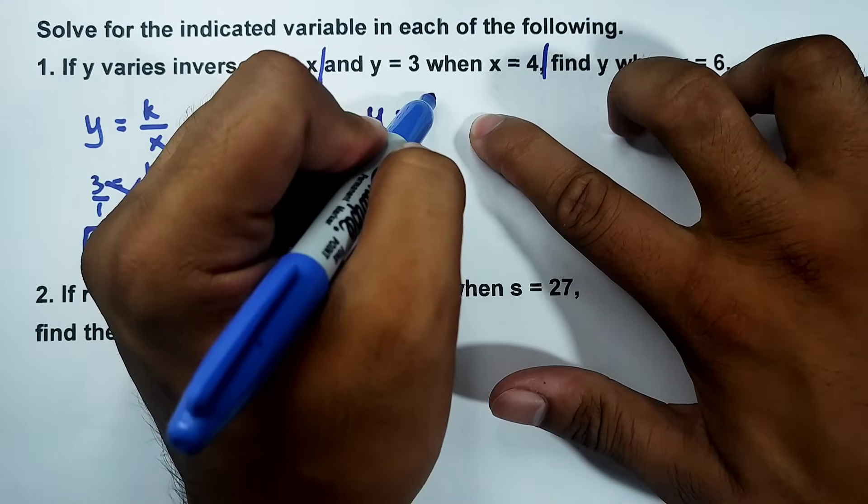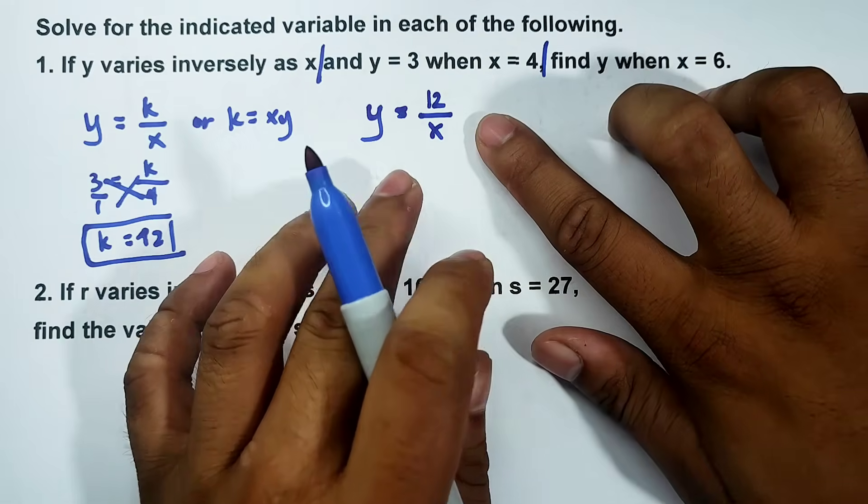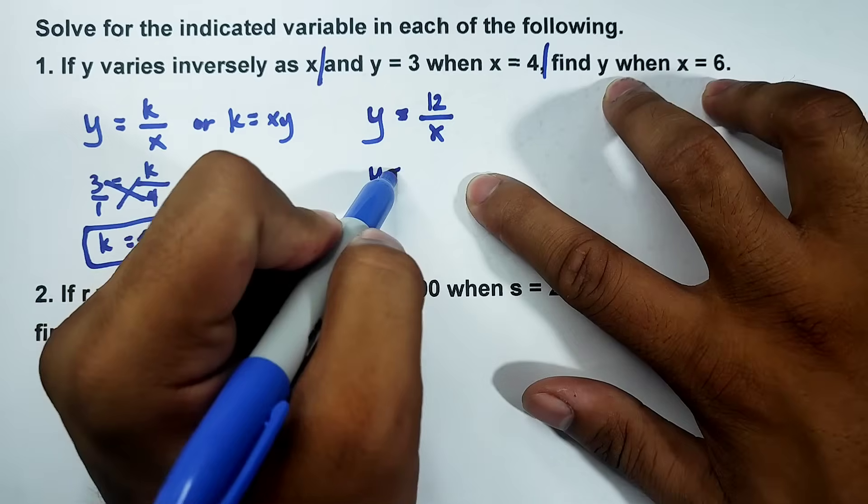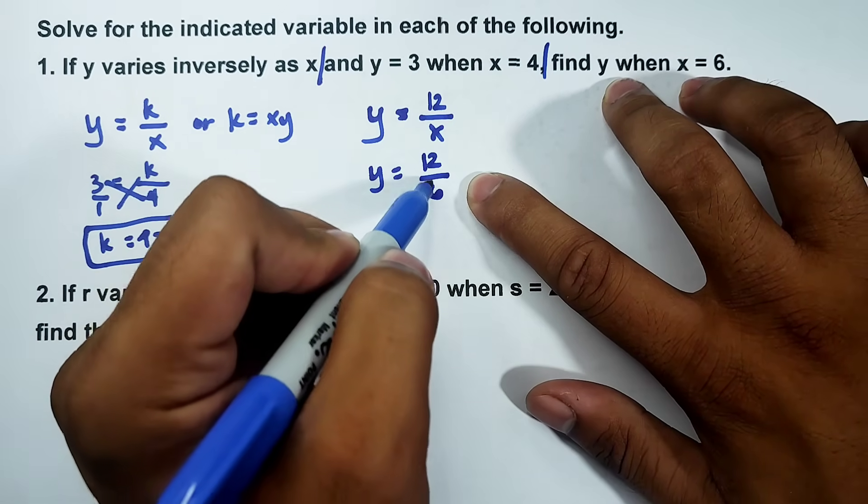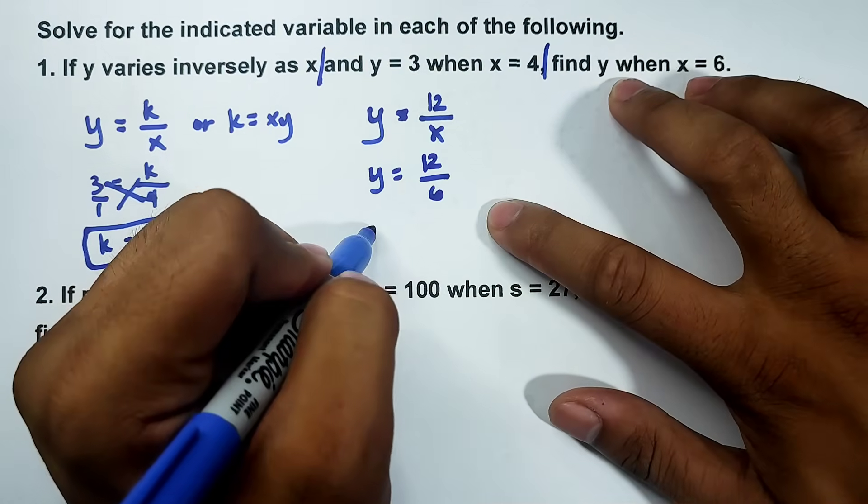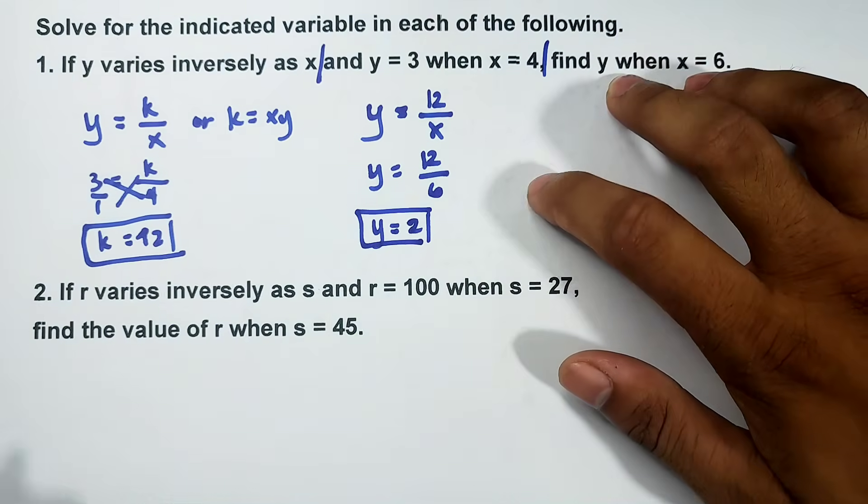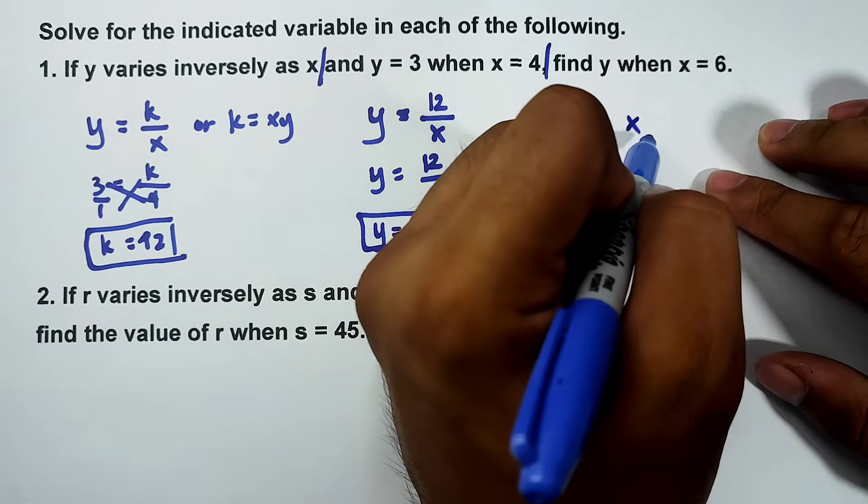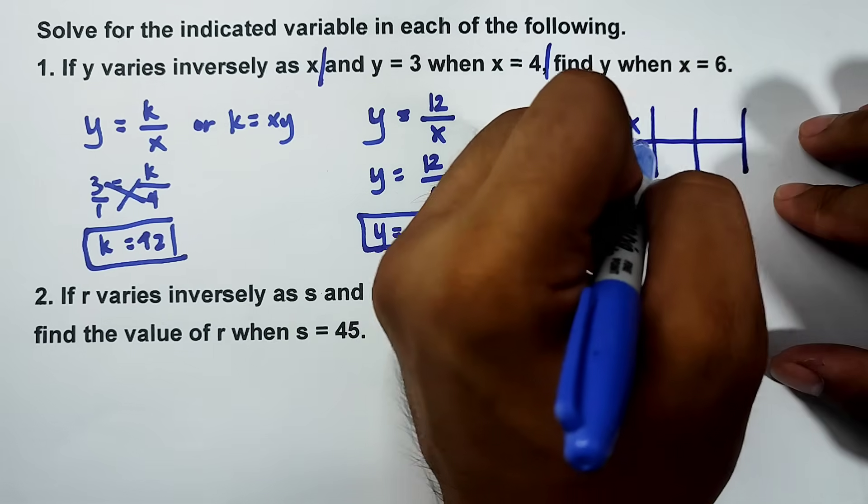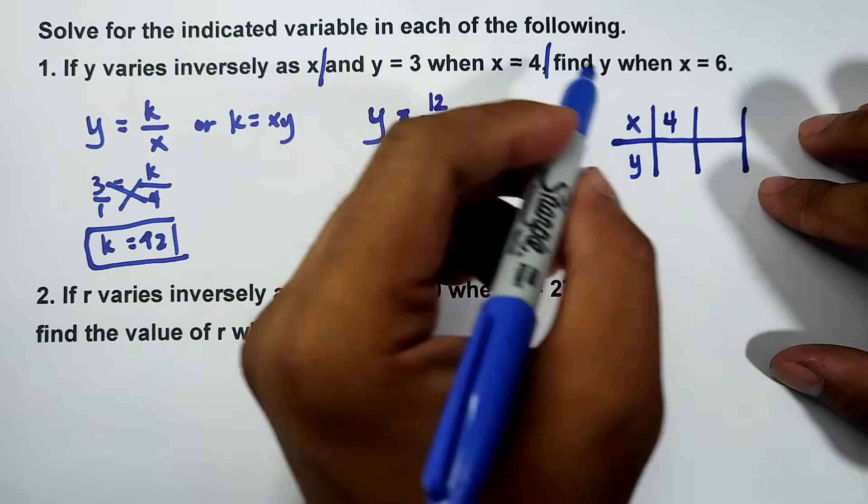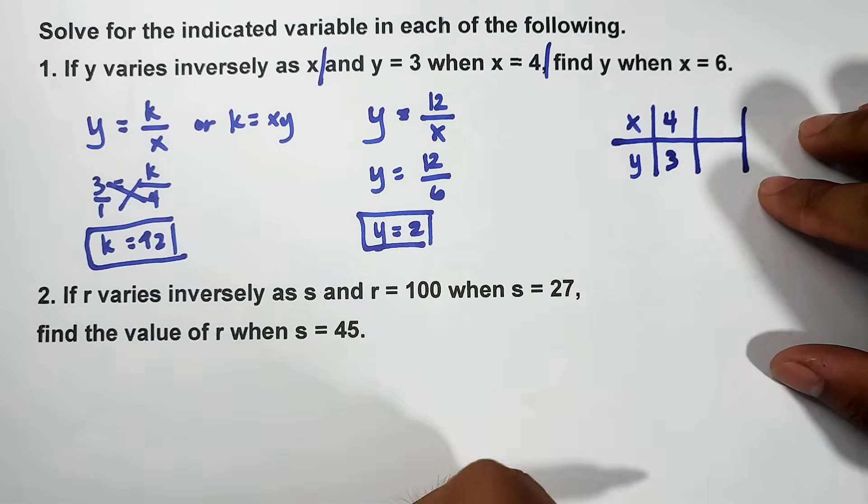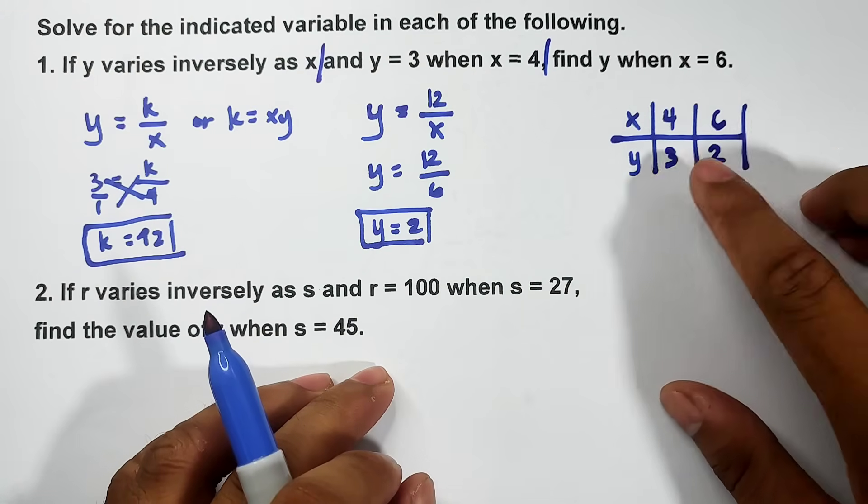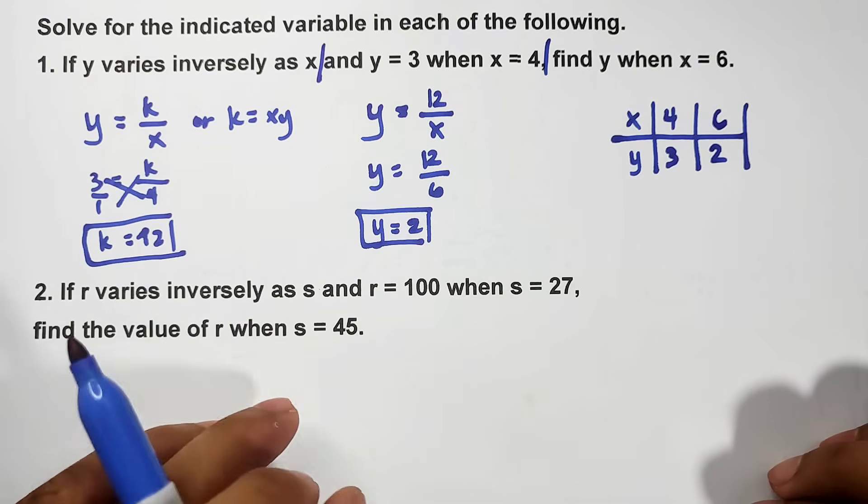Y equals 12 over x, because you need the equation after finding the constant. Now find y when x equals 6. Replace x by 6, that is 12 over 6. Dividing or simplifying this fraction gives you y equals 2. This is our answer. Let's check if this is correct. The movement needs to be inverse. Let's try. When x is 4, y is 3. We got y equals 2 when x is 6. As you can see, your x is going up or increasing, while your y is decreasing. Definitely the answer is correct.